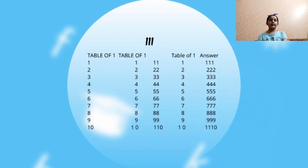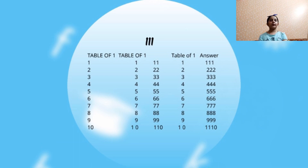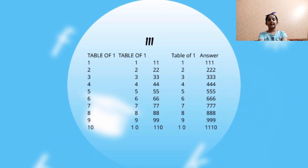Now let's start. 1 plus 0 is 1 and then this 1. 2 plus 0 is 2 and then this 2. 3 plus 0 is 3 and then this 3. 4 plus 0 is 4 and then this 4. 5 plus 0 is 5 and then this 5. 6 plus 0 is 6 and then this 6. 7 plus 0 is 7 and then this 7. 8 plus 0 is 8 and then this 8. 9 plus 0 is 9 and then this 9. 10 plus 1 is 11 and then this 0.